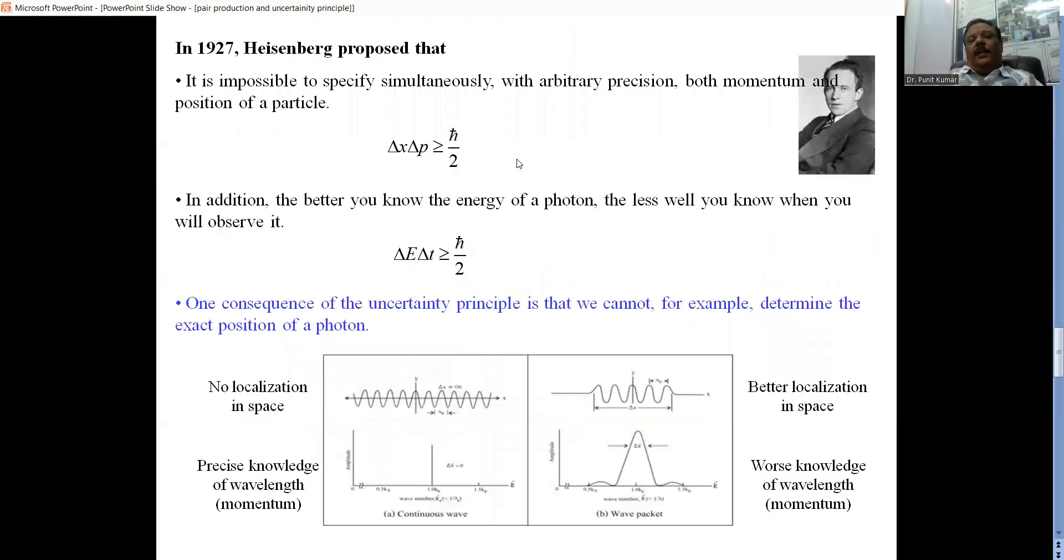Finally, Heisenberg came out with his principle in 1927. He reported that it is impossible to specify simultaneously with arbitrary precision both momentum and position of a particle.